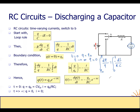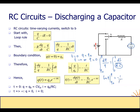The integral of dx divided by x equals ln(x). So here we get ln(Q) evaluated between Q_0 and Q equals minus one divided by RC times t, since RC is constant. This gives us ln(Q) minus ln(Q_0) equals minus t divided by RC, so ln(Q divided by Q_0) equals minus t divided by RC.